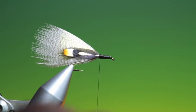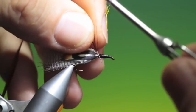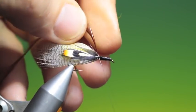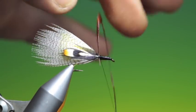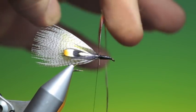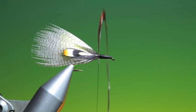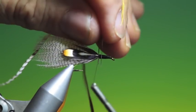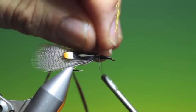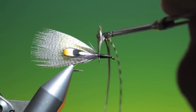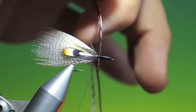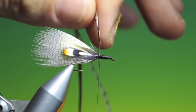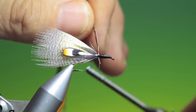Into that, and we need our hackles. A brown and a grizzle. Tie these in 90 degrees to the hook shank, and we want this really nice heavy hackled. Forward.